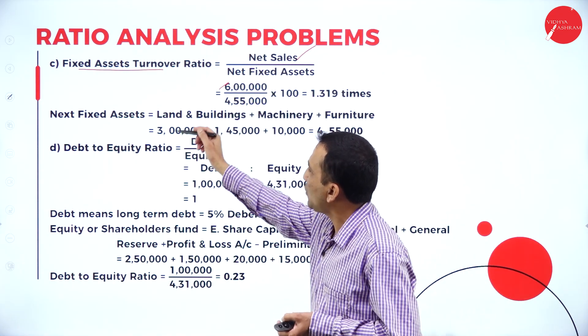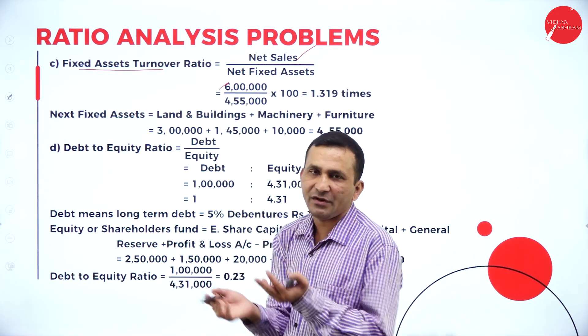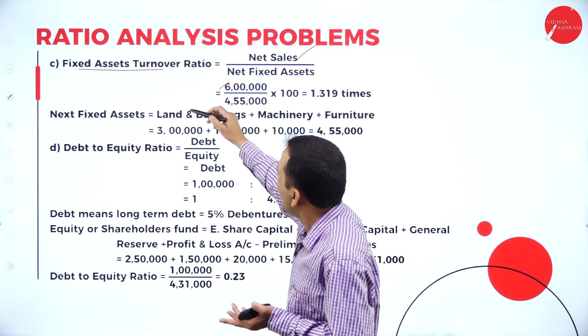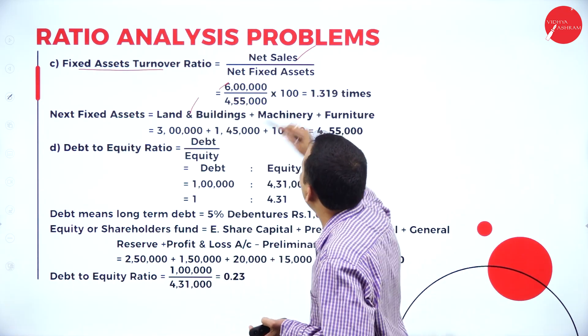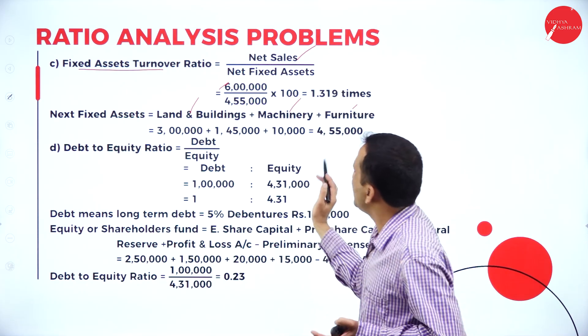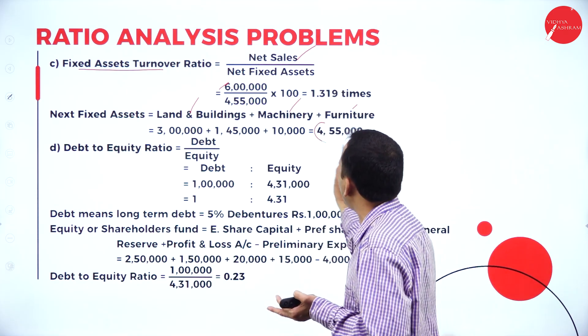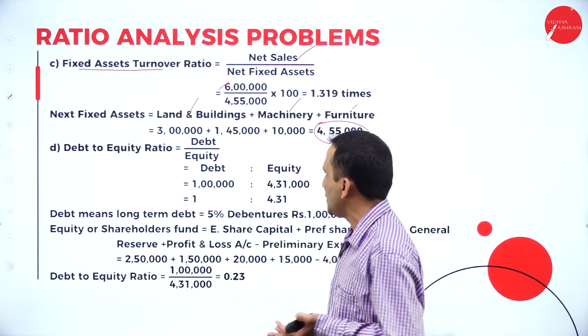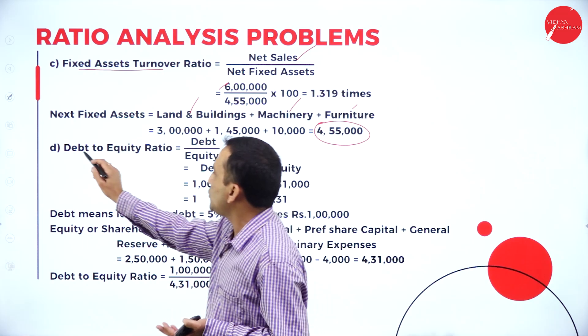Fixed assets in the balance sheet: land and building, machinery, and furniture — three items given. Adding them together, we are getting 4,55,000.